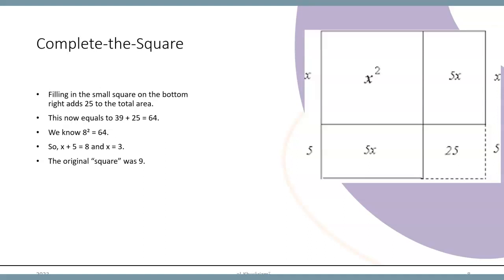We know that 8 squared is 64, so our big square must be 8 by 8. Thus, x plus 5 equals 8, and x is 3, so our original square was 9 units.